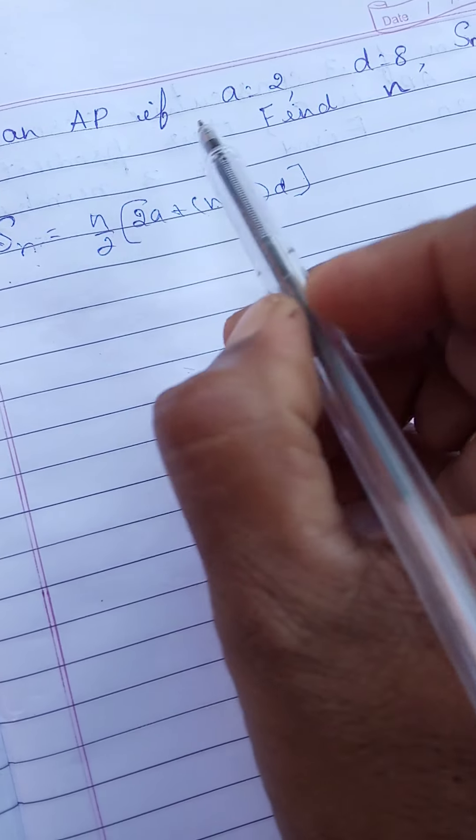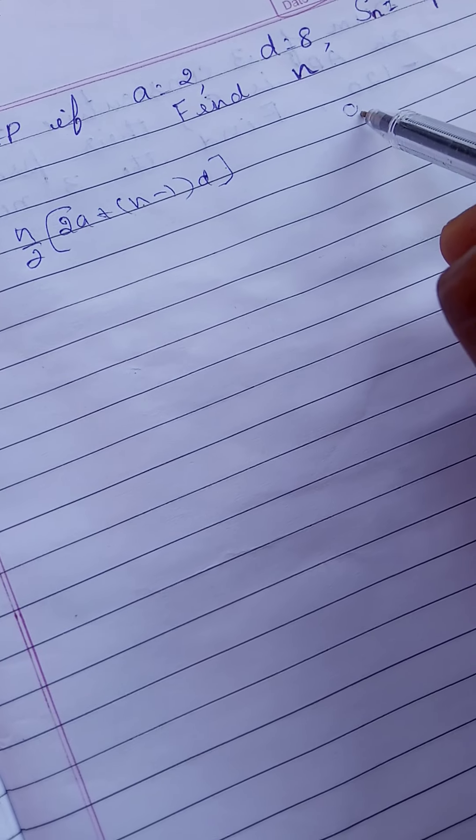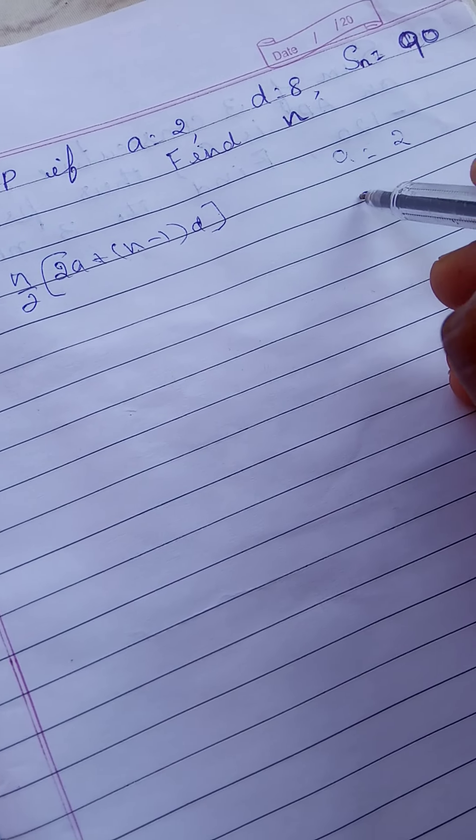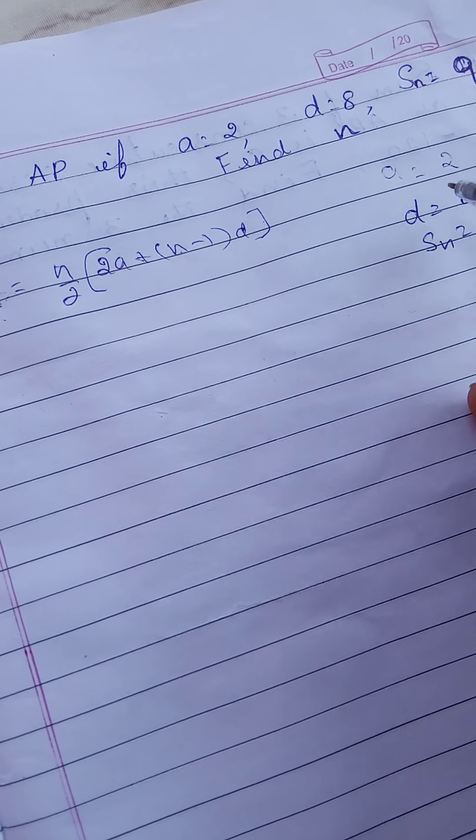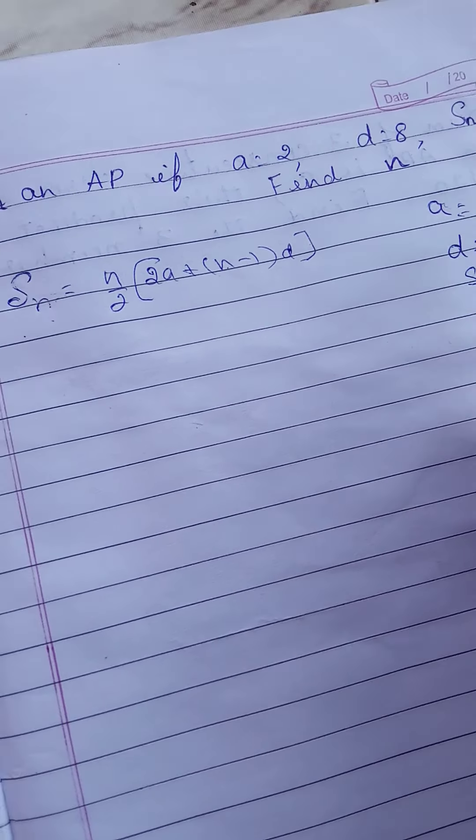First, whatever is given, you write down: A is equal to 2, D is equal to 8, Sn is equal to 90. Then substitute these numbers in the formula.